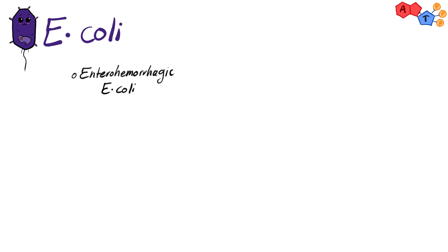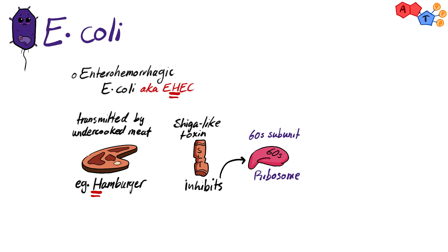Now let's discuss enterohemorrhagic E. coli, or EHEC. EHEC is most commonly transmitted by eating undercooked meat, such as undercooked hamburger. You can remember that from the H in its name. EHEC toxin is shiga-like toxin that inhibits the 60S subunit of the ribosome.